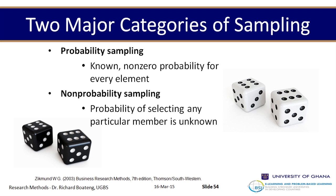There are two categories of sampling: probability sampling and non-probability sampling. In probability sampling we always have a known, non-zero probability of choosing an element. Take an evenly-faced die with six sides — each face has a one-in-six chance of showing up. That's a known probability. Non-probability sampling is where the probability of selecting any element is not known at the beginning of the study.